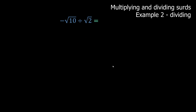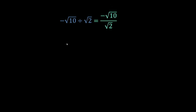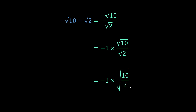Negative square root of 10 divided by root 2. We rewrite it with a coefficient of negative 1 out front and put a big square root over 10 divided by 2. Square root of 10 over 2 is square root of 5. So the answer is negative root 5.